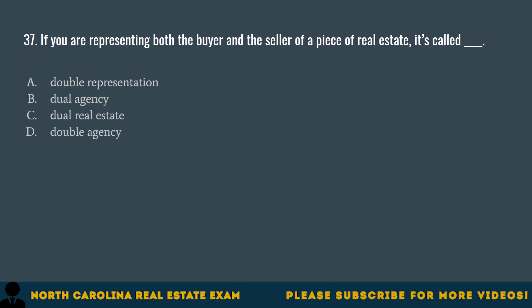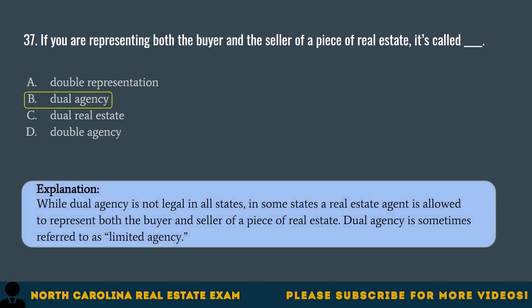Question 37. If you are representing both the buyer and the seller of a piece of real estate, it's called A. Double representation. B. Dual agency. C. Dual real estate. D. Double agency. The correct answer is B. Dual agency. While dual agency is not legal in all states, in some states a real estate agent is allowed to represent both the buyer and seller of a piece of real estate. Dual agency is sometimes referred to as limited agency.